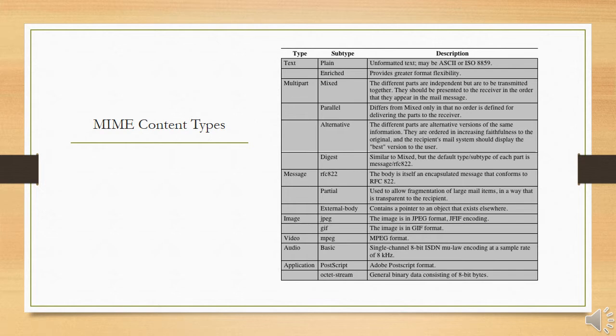The multi-part digest subtype is used when each of the body parts is interpreted as an RFC 5322 message with headers. This subtype enables the construction of a message whose parts are individual messages. For example, the moderator of a group might collect email messages from participants, bundle these messages, and send them out in one encapsulating MIME message.